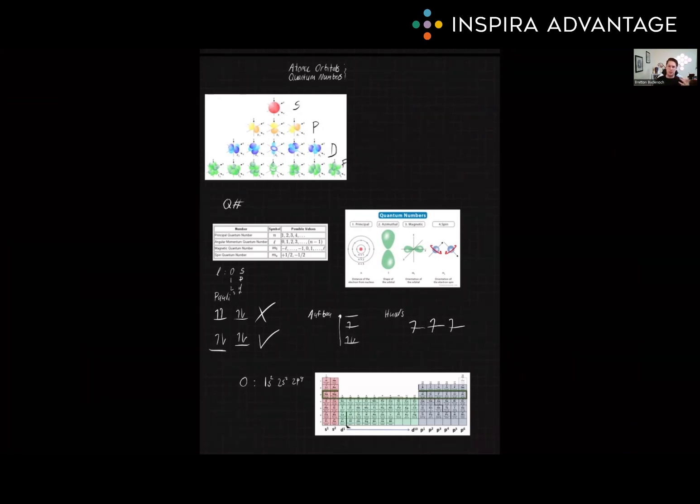It also can help you better understand spectroscopy. Quantum numbers can help predict the energy levels of electrons, which is essential for understanding spectroscopy at a deeper level.